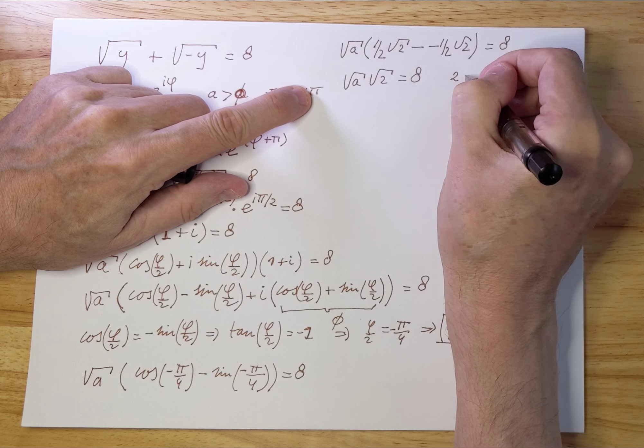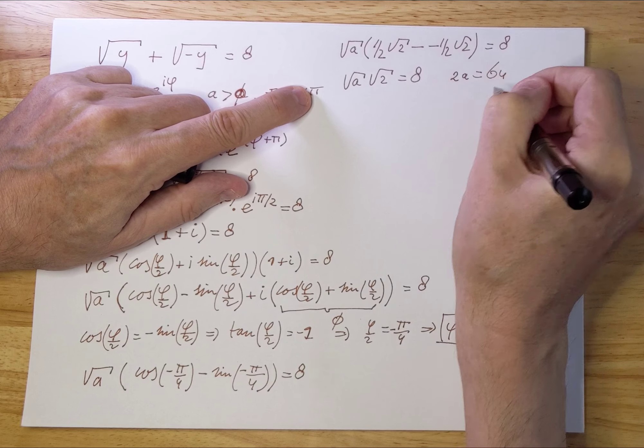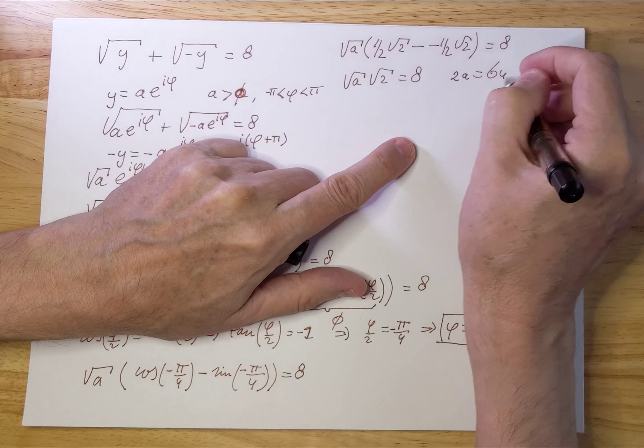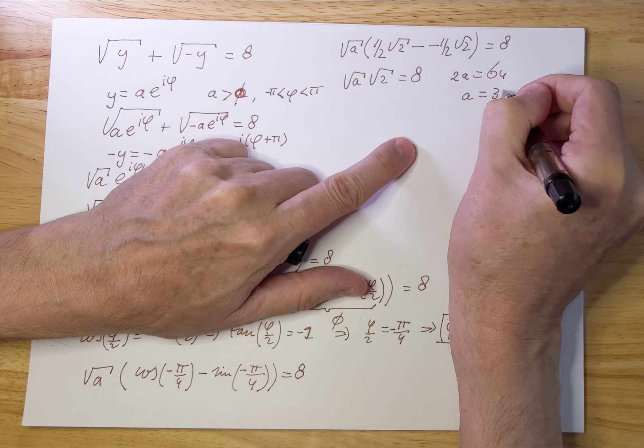As a consequence, if you square both sides, you get 2a = 64. You can do that because a > 0, as we stated. And that means a = 32.